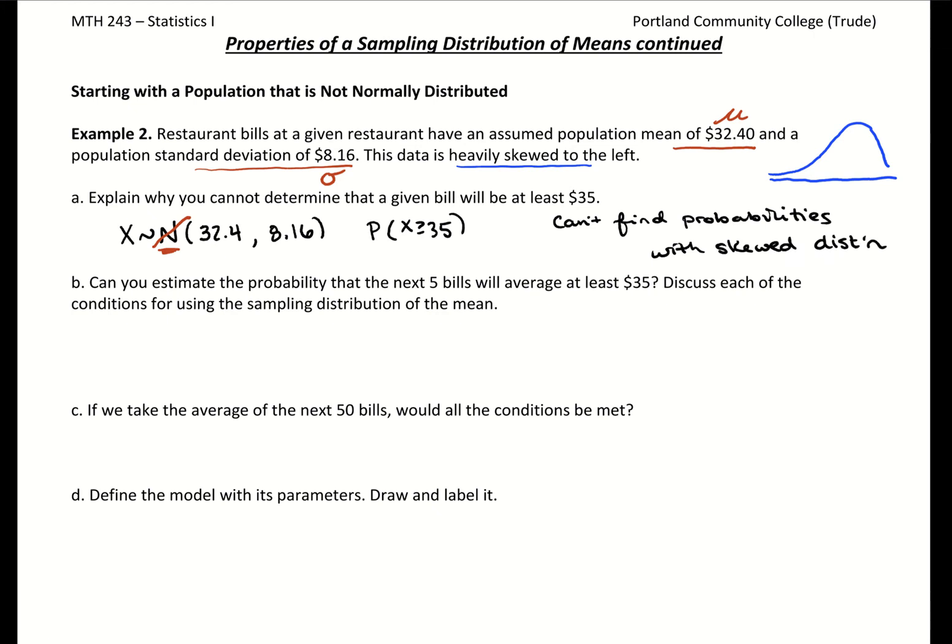Can you estimate the probability that the next five bills will average at least $35? Now we're looking at what if we take five bills and average them. This idea of averaging with a sample size links to our sampling distribution of means. To know if we can estimate it, we need to check our central limit theorem. Do we have independence? Do we have randomization? And do we have a large enough sample size? Independence - how one bill behaves should be independent of the other. Randomization isn't very random since they're taking five bills in sequence, but we'll assume it's random enough.